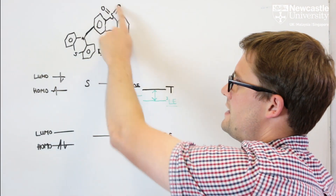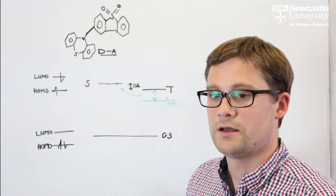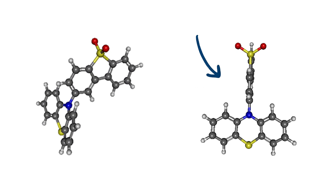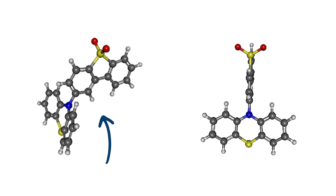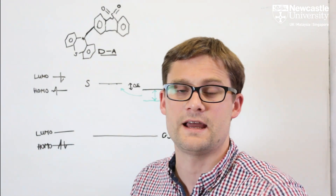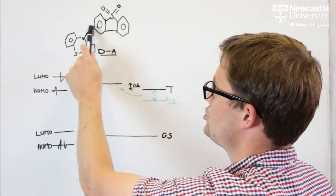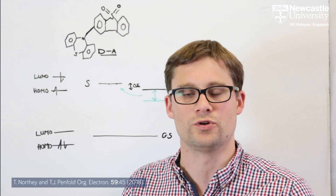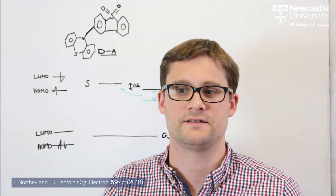In the example on the board, the vibrational motion most responsible for the large full width half maximum is the breathing mode of the bond between the donor and acceptor groups. The most obvious approach to achieve a narrower FWHM is to make this bond more rigid. Unfortunately, the torsion between these two units is also responsible for thermally activated delayed fluorescence, so making this bond more rigid will also make TADF less efficient. Understanding how the molecule moves at this level is therefore crucial to simultaneously optimize FWHM and TADF performance.